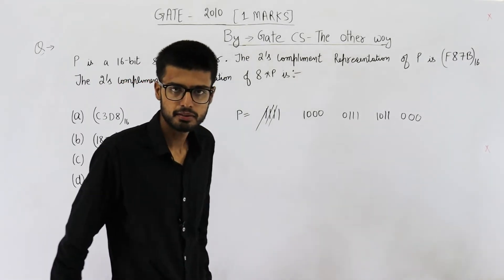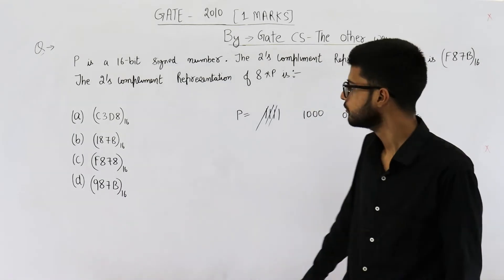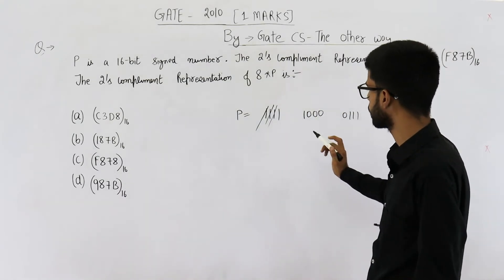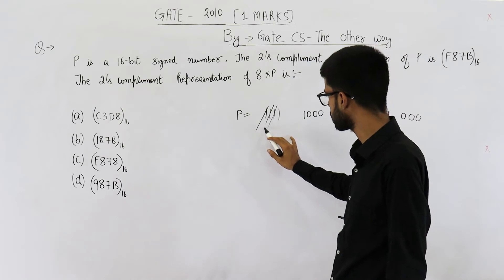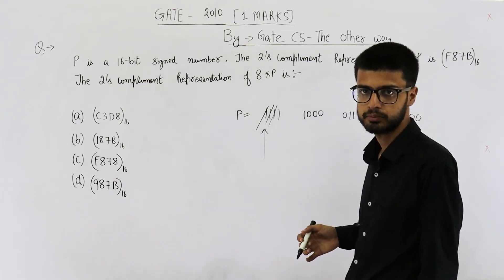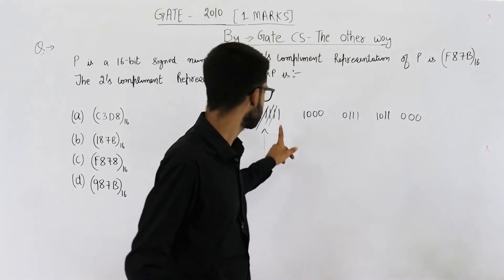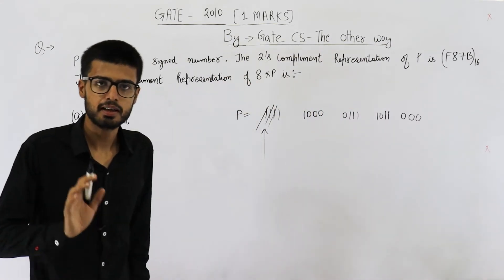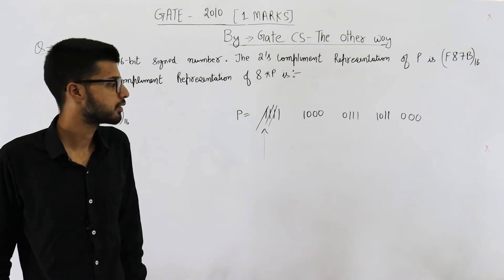Is it correct? Let us see. Yeah, it is correct. Because initially the number started from 1. That means it was a negative number. Now also it is starting from 1 only. That means answer is also negative. So there is no overflow in this case.